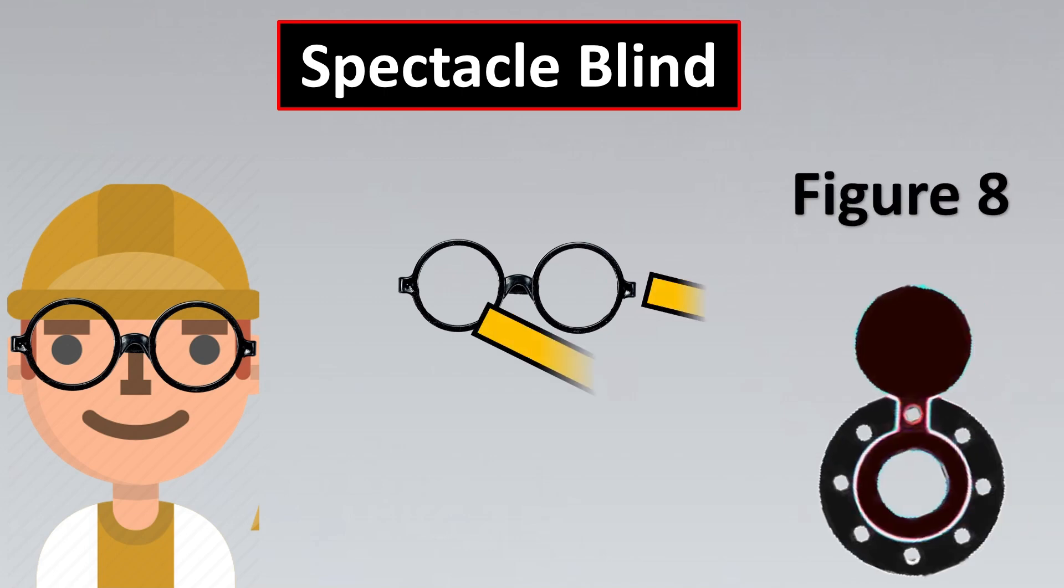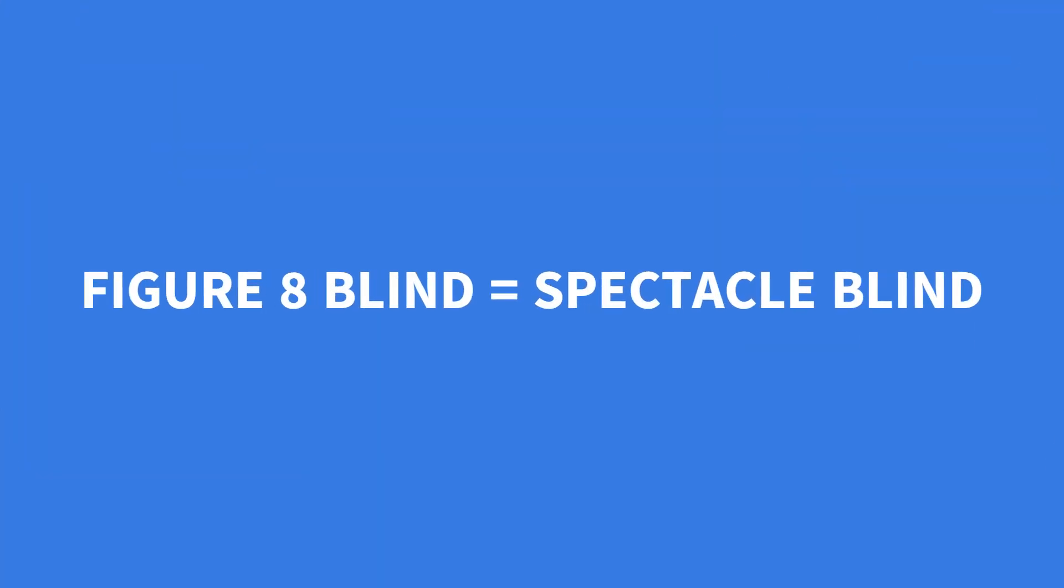If you see the figure 8 symbol, see the top portion and the bottom portion, nothing but two circles which are connected with a frame. This is how a spectacle also looks like. So if you also see in a lot of literature, figure 8 is also called a spectacle blind.